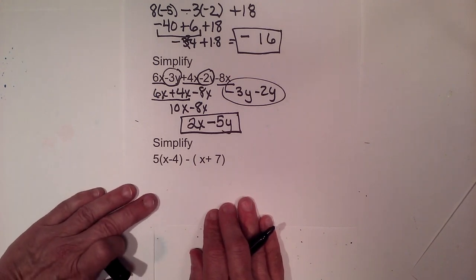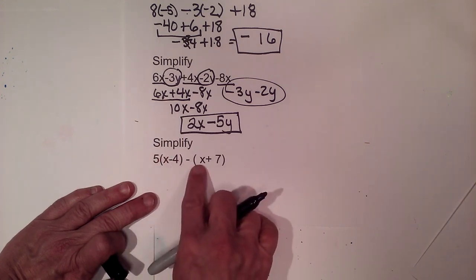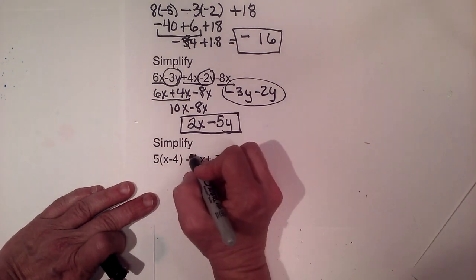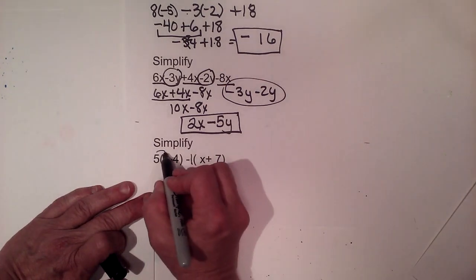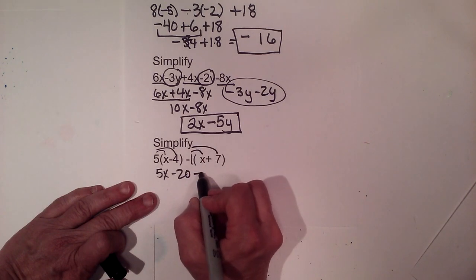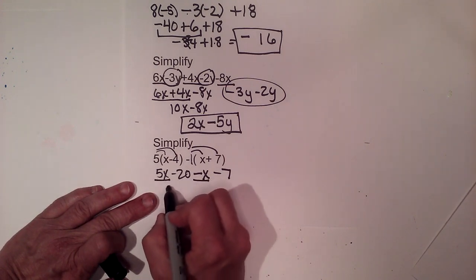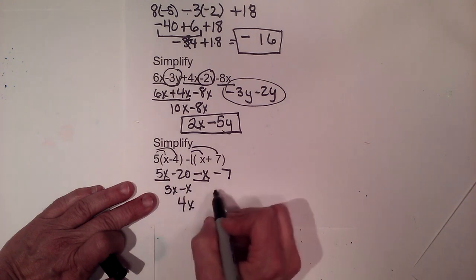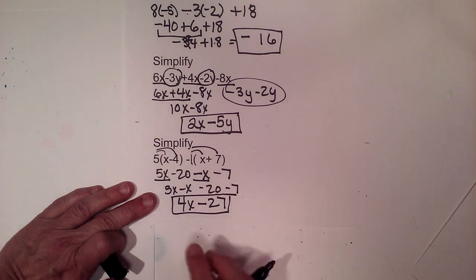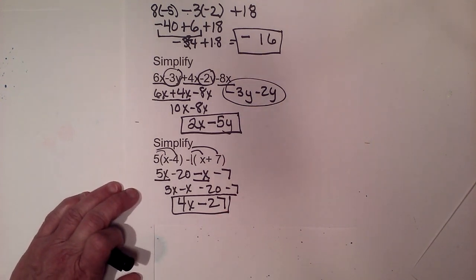For the last problem, we have distributing in the first part and another distribution with a negative one out front. Distribute the five: five x minus twenty. Distribute the negative one: minus x minus seven. Now combine like terms: five x minus x is four x, and negative twenty minus seven — same sign, add and keep the sign — is negative twenty-seven. So four x minus twenty-seven is our final answer. I hope this video was helpful on the seventh grade year in review part two.